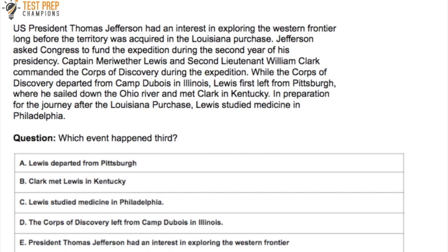Here's another, more challenging example: 'U.S. President Thomas Jefferson had an interest in exploring the western frontier long before the territory was acquired in the Louisiana Purchase. Jefferson asked Congress to fund the expedition during the second year of his presidency. Captain Meriwether Lewis and 2nd Lieutenant William Clark commanded the Corps of Discovery during the expedition. While the Corps of Discovery departed from Camp Du Bois in Illinois, Lewis first left from Pittsburgh where he sailed down the Ohio River and met Clark in Kentucky. In preparation for the journey after the Louisiana Purchase, Lewis studied medicine in Philadelphia.' Which event happened third? A. Lewis departed from Pittsburgh. B. Clark met Lewis in Kentucky. C. Lewis studied medicine in Philadelphia. D. The Corps of Discovery left from Camp Du Bois in Illinois. E. President Thomas Jefferson had an interest in exploring the western frontier.